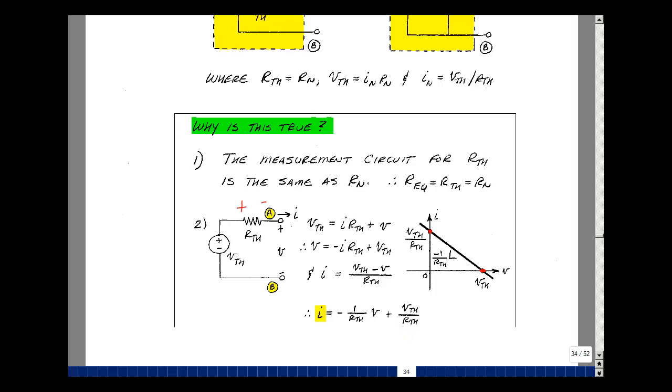That's the equation of a straight line. Let's find the intercepts. When the voltage is equal to zero, the current is equal to V Thevenin over R Thevenin. That's this red dot over here. When the current is equal to zero, the voltage V is equal to V Thevenin. That would be the second point. All possible answers of V and I that are here fall on this straight line.